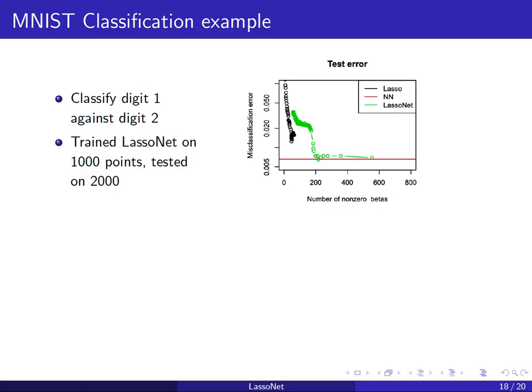Now to a more exciting real-data application: a classification task. The model works with both classification and regression; here the loss function is the negative log-likelihood of the binomial case. I use a thousand data points for training and two thousand for testing, classifying digit one against digit two — a subset of the MNIST dataset. The neural network does best using the entire set of features, but I can provide a solution using a quarter of the total number of features that reaches the same if not better predictive accuracy.